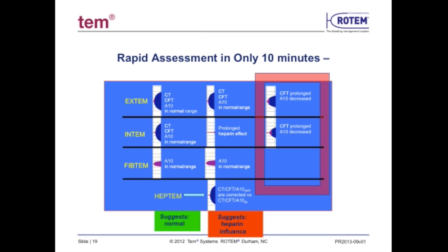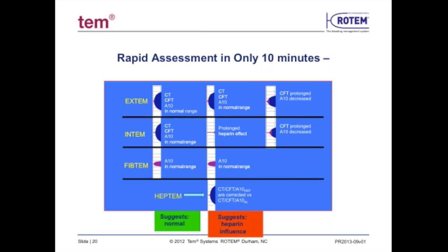In the third example, both Extem and Intem demonstrate prolonged CFT and lower amplitude at A10. To differentiate whether the problem was due to low platelets or low fibrinogen, a FibTem was performed. The FibTem then demonstrated adequate fibrin contribution to the clot, and therefore the suggestion is that platelets are needed.